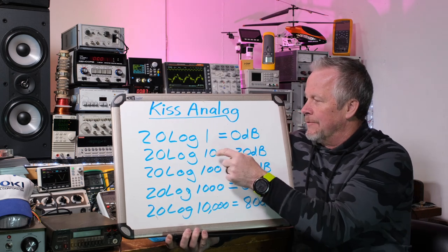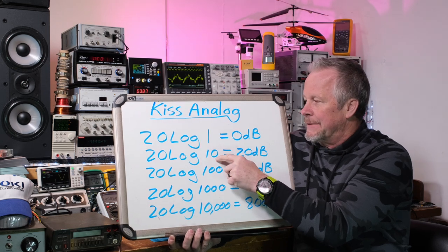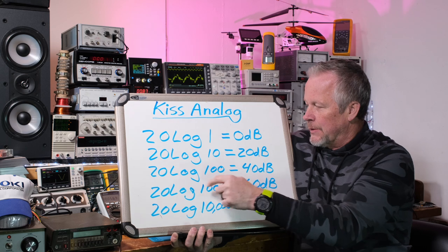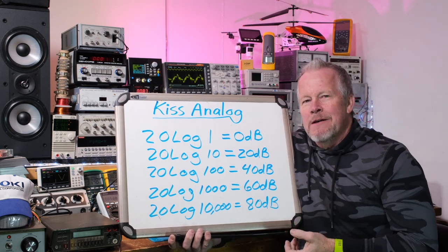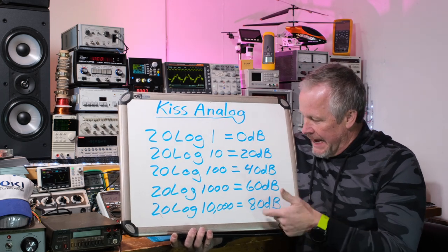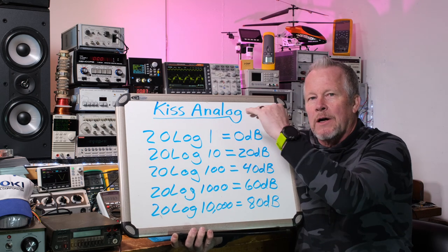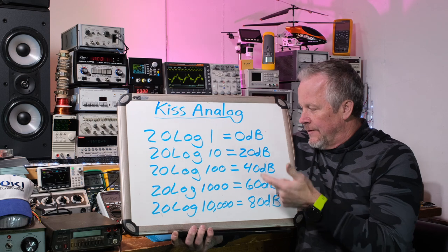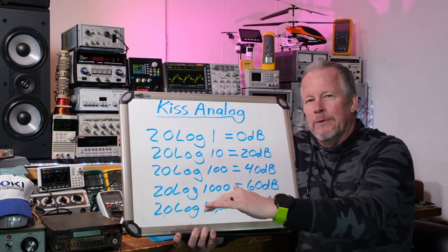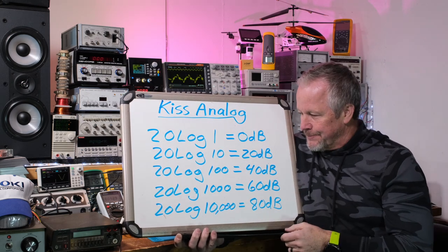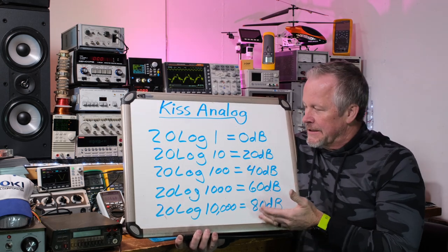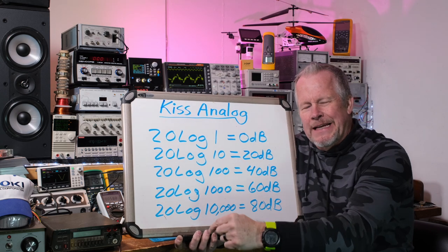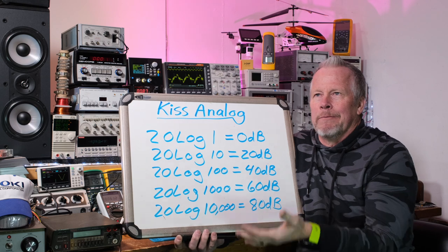Log of 10 was 1, so 20 times 1 is 20 dB. Two zeros — 20 times 2 is 40 dB. Three zeros — 20 times 3 is 60 dB. When you think about it that way, it makes it really easy to look at a graph and go, that's 80 dBs. Usually we start at a reference point of 0 dBs and go down. But you can also go up — a gain of 80 dBs, or attenuated by 80 dBs.